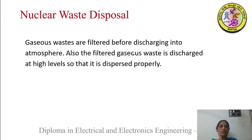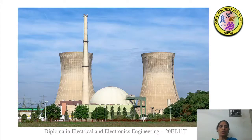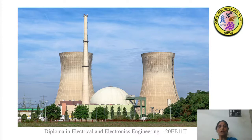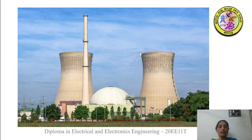For gaseous waste: it is filtered before discharging into the atmosphere. The filtered gaseous waste is discharged at a high level so that it is dispersed properly. As you can see in the picture, it is released through a high chimney so that it goes high up into the atmosphere and does not affect human beings. That is why we take so much care in waste disposal — because we don't want it to affect the population surrounding these areas.